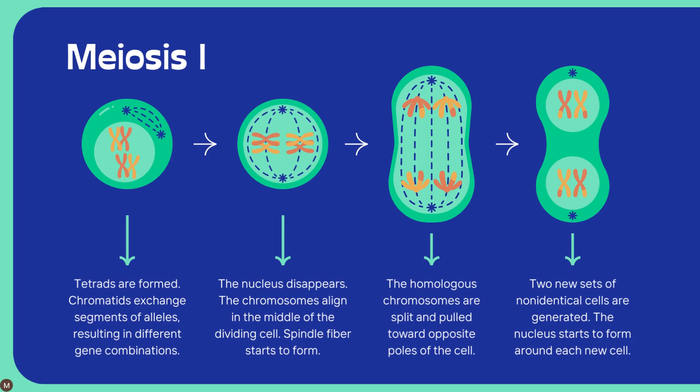The nucleus will disappear, and then chromosomes align in the middle of the dividing cell — spindle fibers start to form. This phase is metaphase 1. Then anaphase 1 comes, in which the separation of homologous pairs occurs towards the opposite poles. The last phase is telophase 1, where two new sets of non-identical cells are generated. The nucleus starts to form around each new cell. This process is known as cytokinesis — the formation of a cleavage furrow between the two cells, forming two different cells.